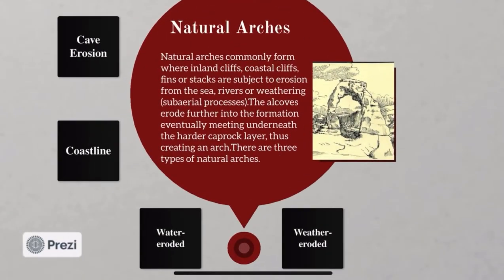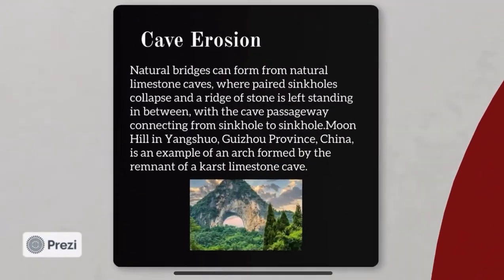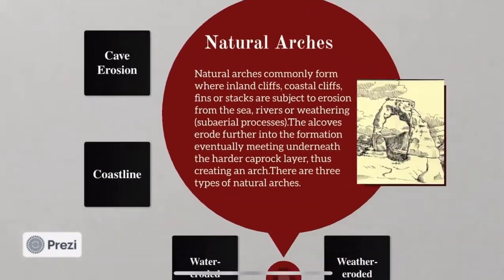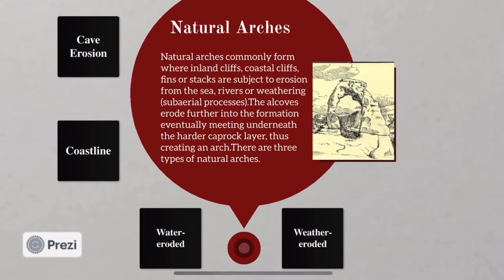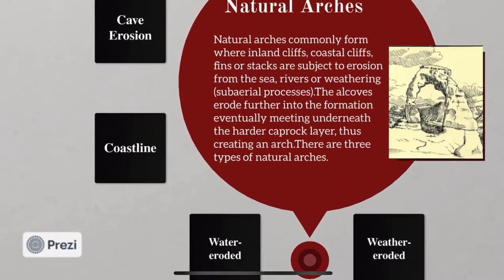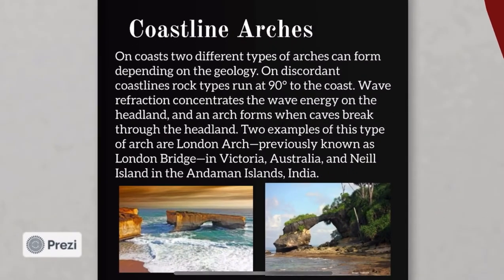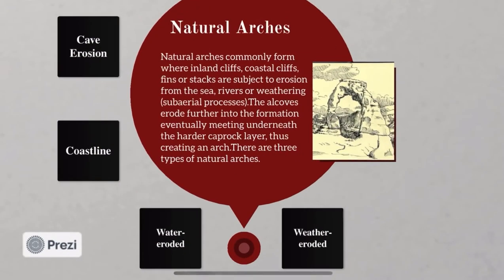Starting with natural arches — natural arches commonly form where inland cliffs, coastal cliffs, fins and stacks are subject to erosion from the sea, rivers or weathering. There are three types of natural arches: coastline arches, water-eroded arches and weather-eroded arches. All these are formed as a result of cave erosion.